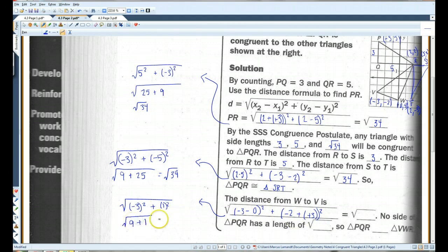So, I've got square root negative 3 squared plus negative 2 plus 3 is positive 1. So, I've got 9 plus 1, which gives me the square root of 10. This equals the square root of 10. No side of triangle PQR has the length of root 10. So, PQR is not congruent to triangle VWR.